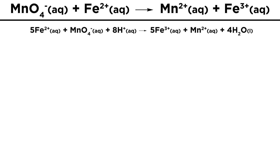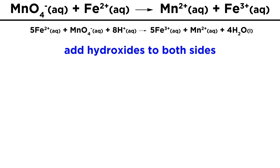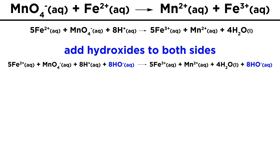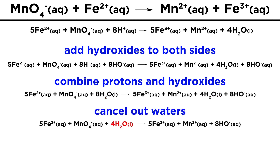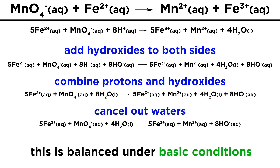Let's finish this off by balancing under basic conditions just to be thorough. As we know, this first involves getting rid of the hydrogen ions by adding that same number of hydroxide ions to both sides — so here that's 8 hydroxides on each side — and on the left the protons and hydroxides give us 8 waters. Next we cancel out some waters. There are 4 on the right, so we can get rid of 4 on both sides, leaving 4 on the left and none on the right. And that's all there is to it. This is now balanced under basic conditions.